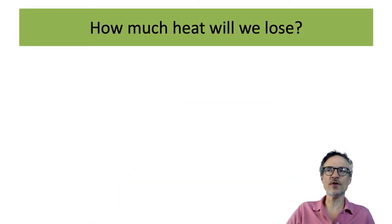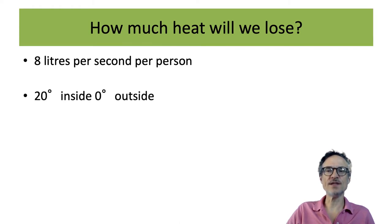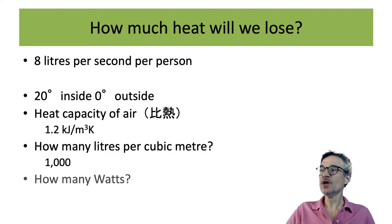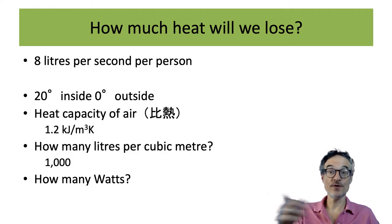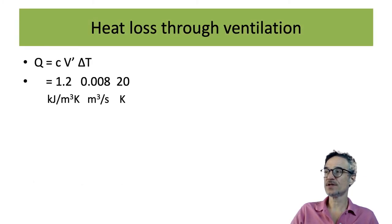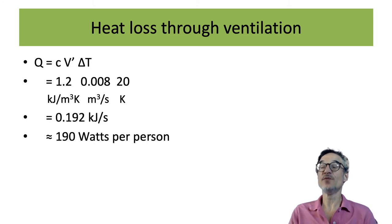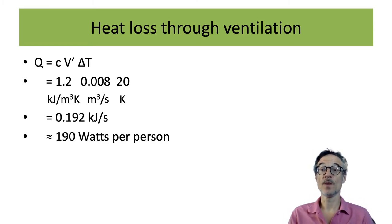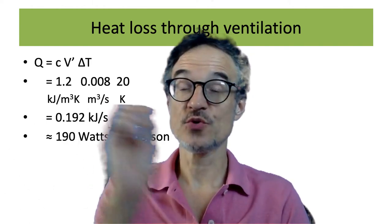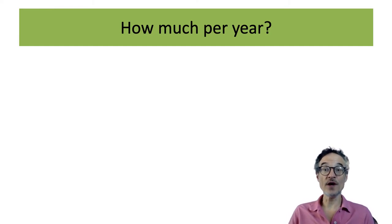We can work this out. If we've got eight litres per second per person, say it's 20 degrees inside and freezing outside, we know how much heat is in the air and how many litres are in a cubic metre, so we can work out how many watts we are losing. If we're ventilating at eight litres per second per person, how many watts are we throwing away in that hot air as colder air comes in? This gives us the extra heat needed per person to make up for the hot air we're throwing away when it's, say, zero degrees outside and 20 degrees inside.